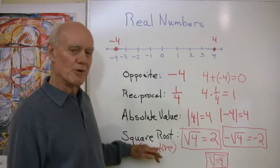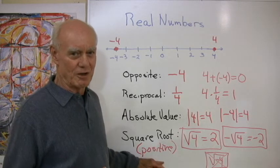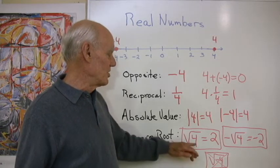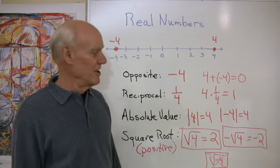And then the last thing, square root. When we say square root, we really mean the positive square root. It's the positive number we square to get that number four. So in this case, it's two.